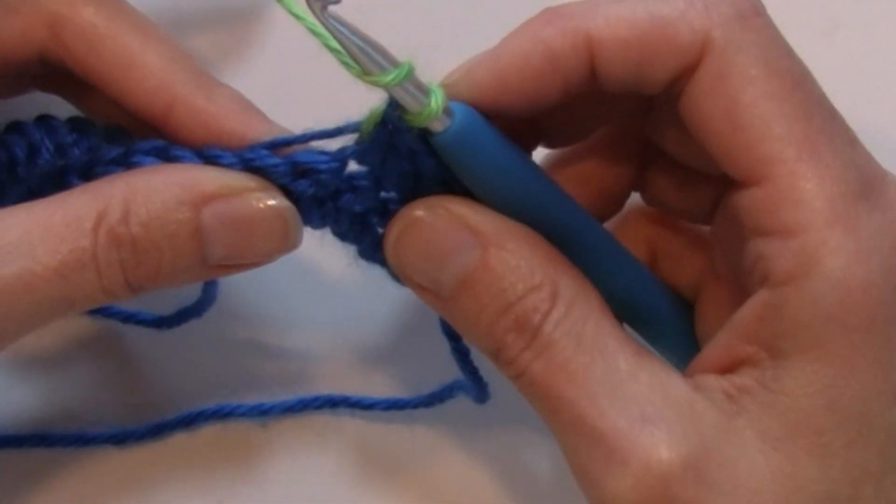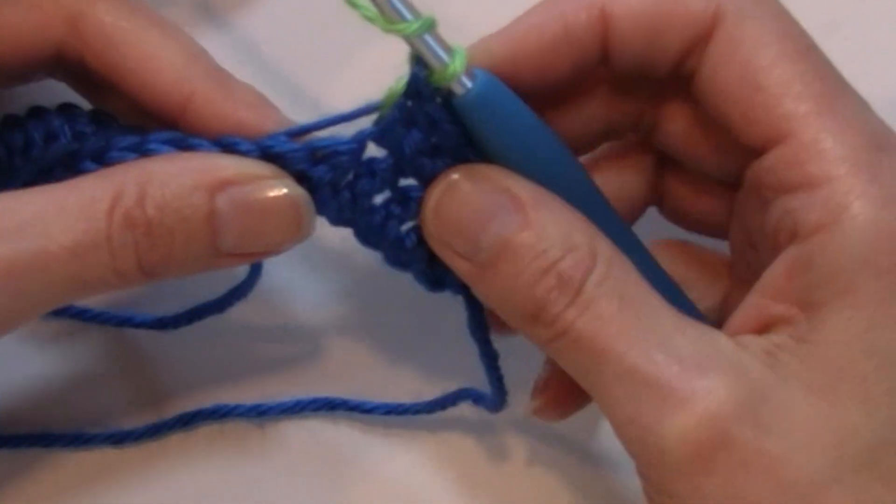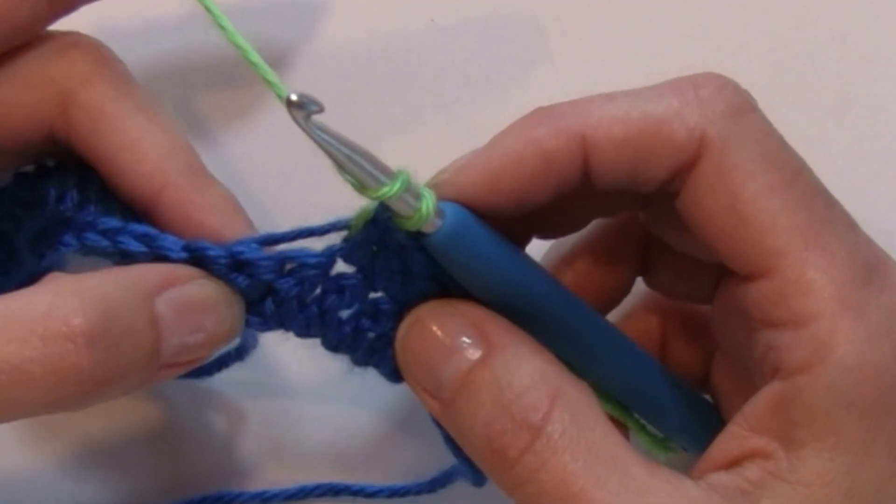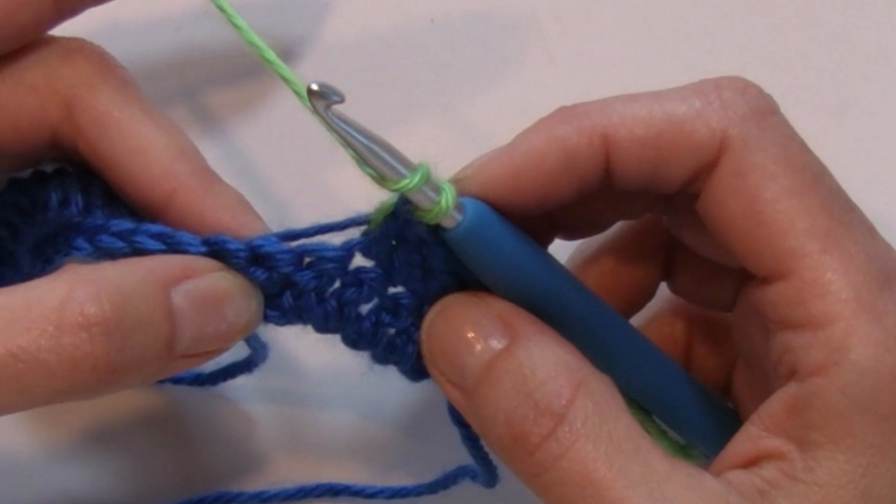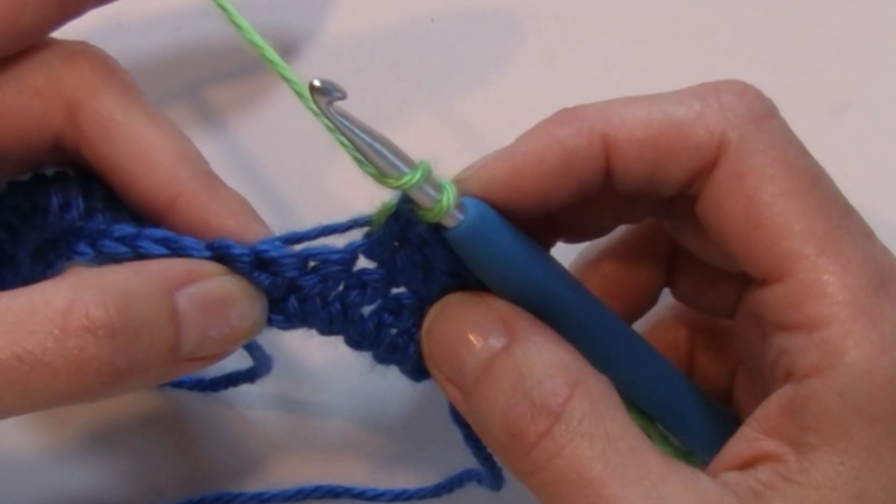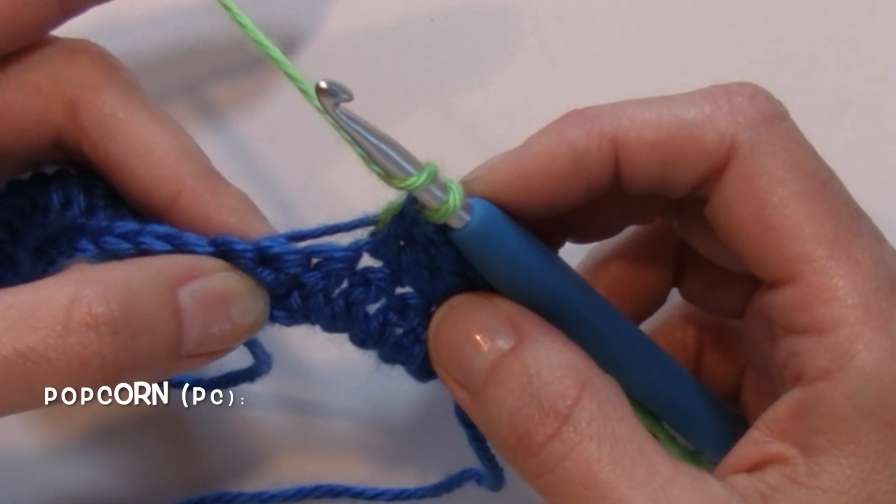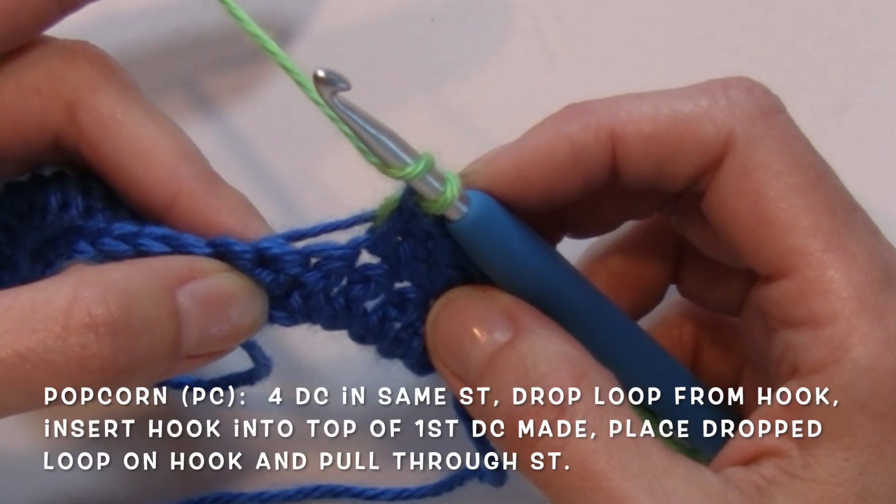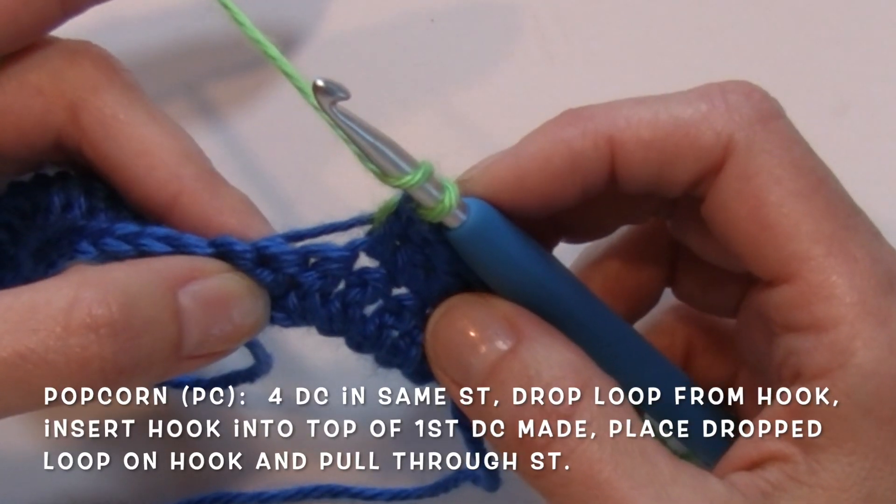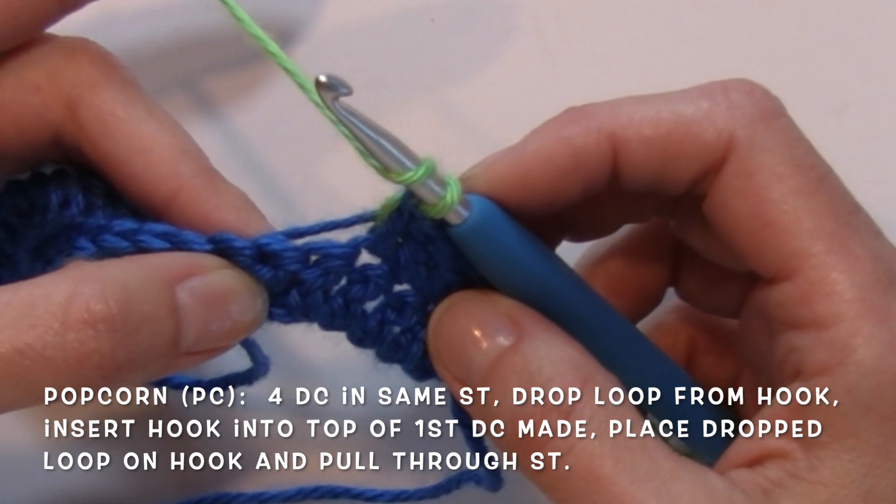I'm going to carry it and work over it with this popcorn stitch. A popcorn stitch is basically multiple double crochets worked in the same stitch and then you pull your yarn through that first stitch in order to cause it to bunch up to create that popcorn texture.